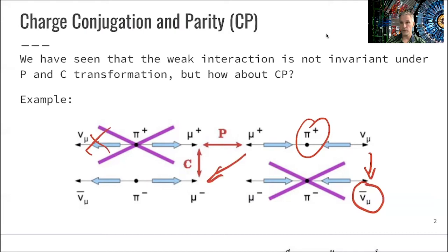But what does work if you apply the parity and charge conjugation together. You turn the positively charged pion into a negatively charged pion, the antimuon into a muon, and the neutrino into an antineutrino. You see here that the antineutrino is right-handed, and so is the muon. That decay is actually observed in nature.